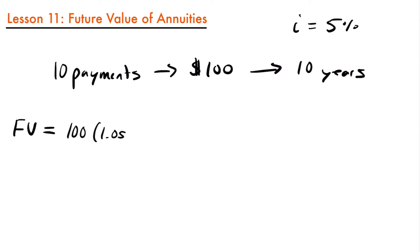That will be to the power of nine. Then we would add our second payment of $100, deposited at the end of year two, which would only be in your account for eight years. So we would multiply that by 1.05 to the eighth power. And you could see how we could continue on with this until our final payment.